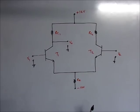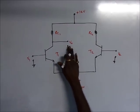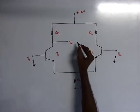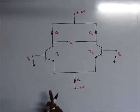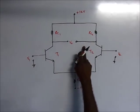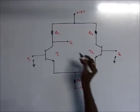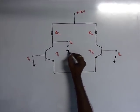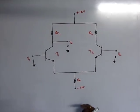The differential amplifier can be used in four different modes. Suppose you take both inputs simultaneously and take the output — this type of circuit is known as double-ended input and double-ended output. If you take the output across only a single collector, then this type of circuit is known as double-ended input and single-ended output.